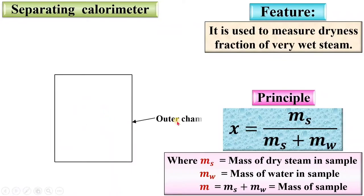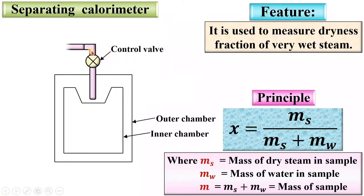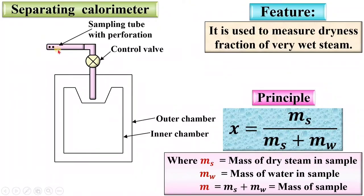This is the outer chamber, and this one is the inner chamber. This one is the pipe from where you can take the sample of the steam, and here a wall is provided — this is called the control wall. It is directly connected to the sampling pipe with perforation, meaning small holes are provided on the pipe, and that is directly connected to the main steam pipe from where we want to find the dryness fraction of the steam.